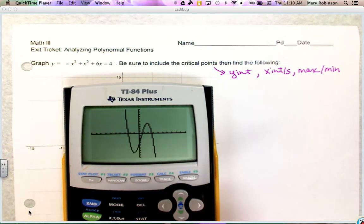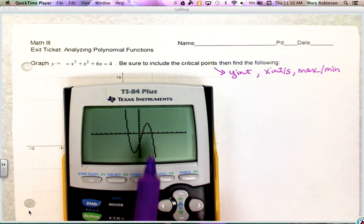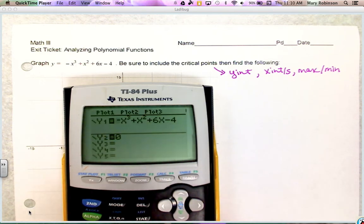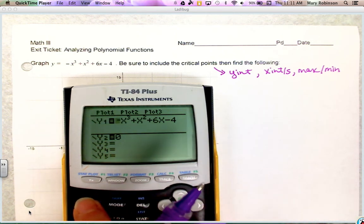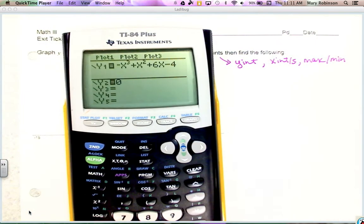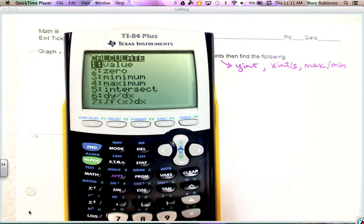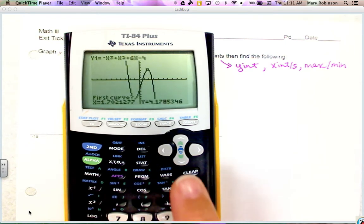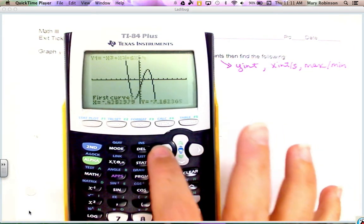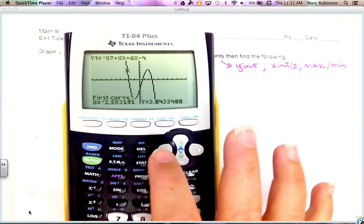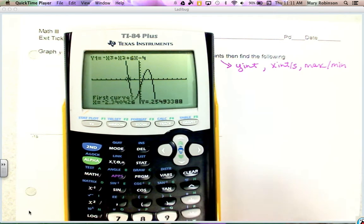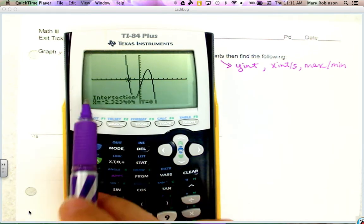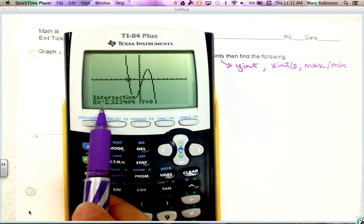I'm going to first start off by finding our zeros, which are the x-intercepts. Make sure we have zero in y2 and we want to find the intersection. To find the intersection I'm going to press 2nd trace 5, and then I'm going to move my cursor to the left and put it over or close to where my first x-intercept is, and then we press enter three times.